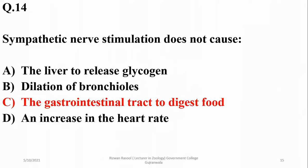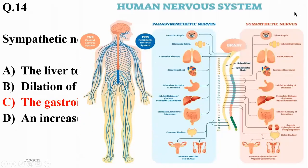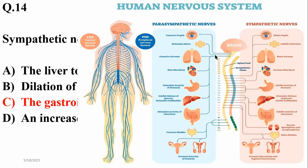Sympathetic nerve stimulation does not cause the gastrointestinal tract to digest food. There are two basic types of the autonomic nervous system: sympathetic and parasympathetic. During sympathetic stimulation, more energy is directed to muscles, and activity of the stomach or gastrointestinal tract is inhibited rather than stimulated.